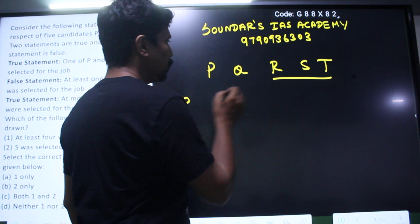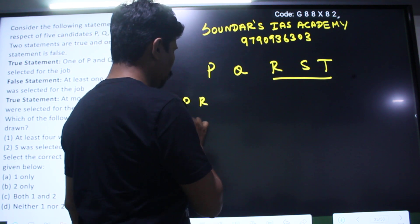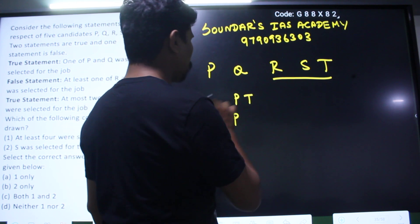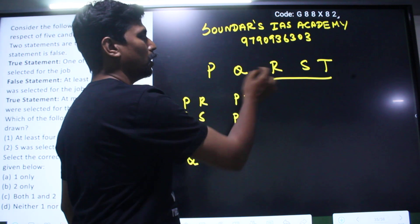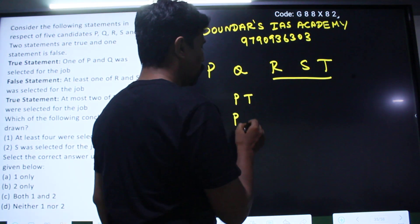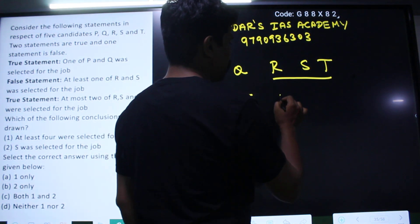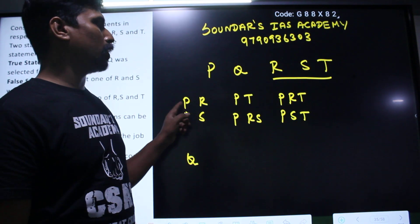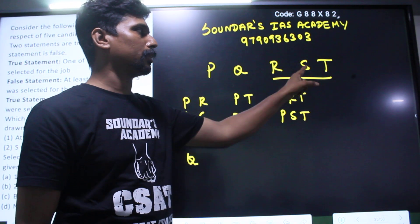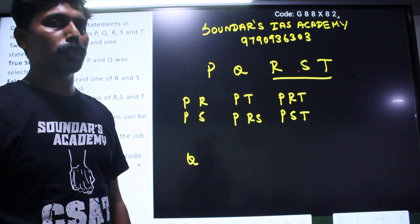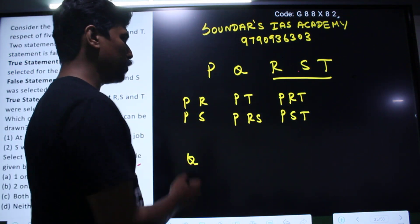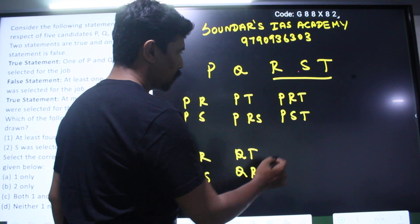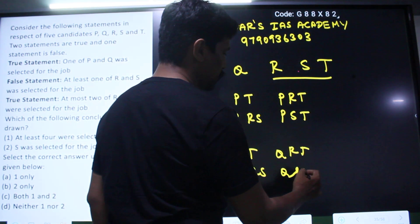In the case of P and Q — which was selected for the job, or both P and Q selected for the job? Enumerating: P with R, P with S, P with T, at most 2 — P,R,S selected; P,R,T selected; P,S,T selected. At most 2 of R, S, T — 3 selected, P,R,T selected. That is the option.